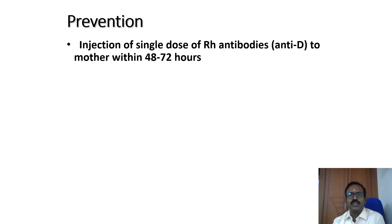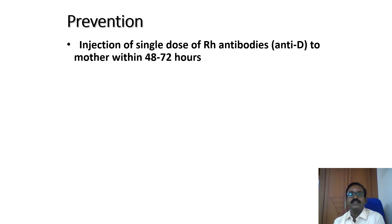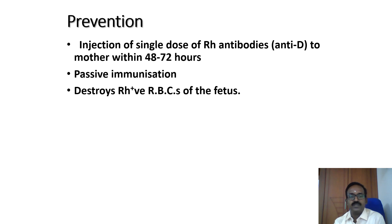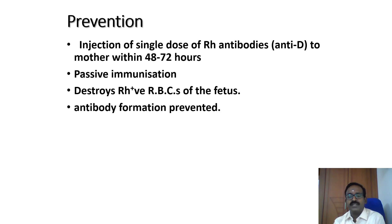Prevention of erythroblastosis fetalis is by injecting a single dose of anti-D antibody to the mother immediately after delivery, especially within 48 to 72 hours after delivering the first baby. This is passive immunization — we give the antibodies, which destroy the Rh positive fetal cells that have entered the maternal circulation, thereby preventing anti-D antibody formation in the mother for subsequent pregnancies.